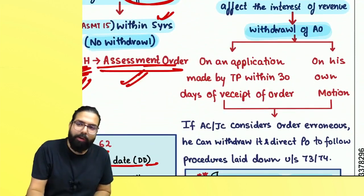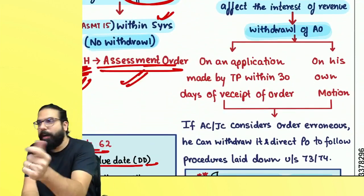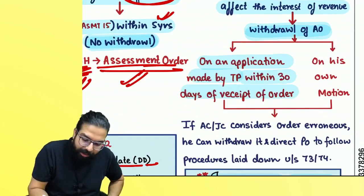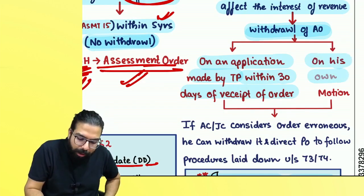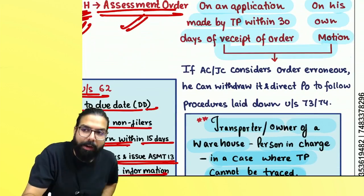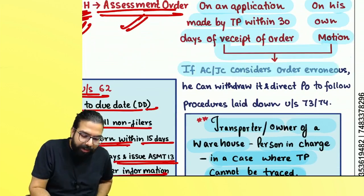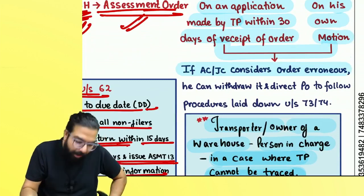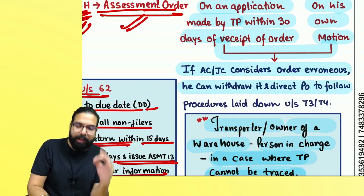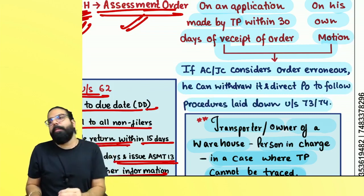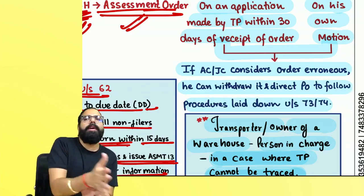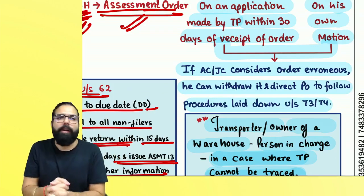The summary assessment order can be withdrawn on an application by the taxable person within 30 days of receipt of the order, or by the proper officer on his own. But withdrawal will only happen if the AC or JC — Additional Commissioner or Joint Commissioner — is satisfied that the order was erroneous. He can then withdraw it and direct the proper officer to follow the proceedings under sections 73 and 74, meaning by giving a proper show-cause notice, opportunity of being heard, and then passing a demand order.